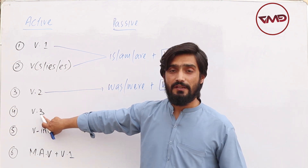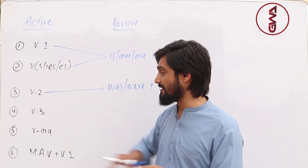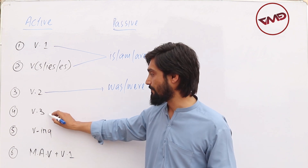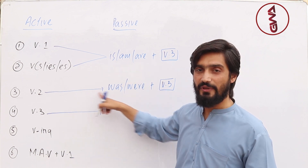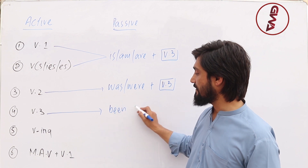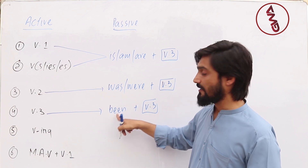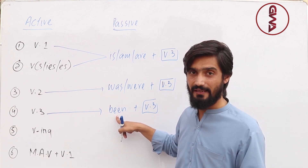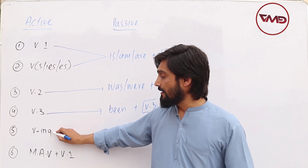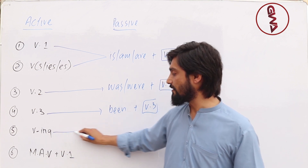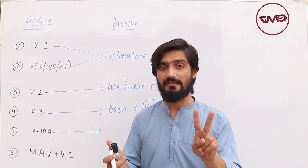The third form appears in the present perfect, past perfect, and future perfect tenses. For perfect tenses in passive voice, we use have/has/had plus been plus the third form. The word 'been' is added — you won't see 'been' in the active voice of perfect tense, but you will see it in passive voice. The ing form represents continuous tenses. Grammarians say only present continuous and past continuous are commonly changed to passive.